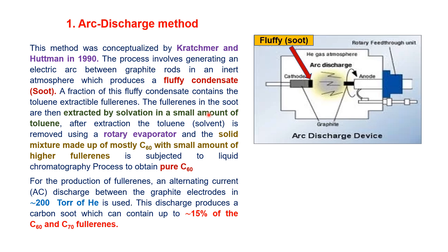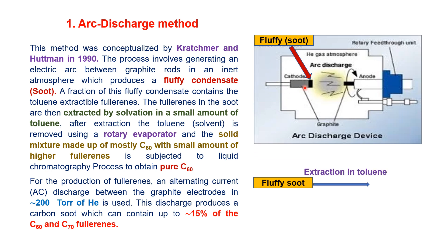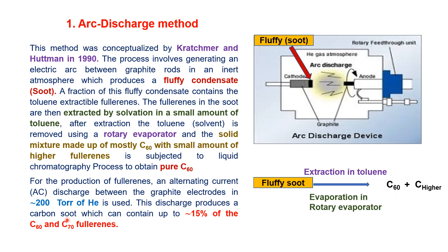The fluffy condensate deposited on the cathode is extracted and treated with toluene. The toluene is then evaporated in a rotary evaporator, and the solid sample containing C60 and some higher members is obtained. This is further subjected to liquid chromatography to obtain pure C60. For the production of fullerenes, alternating current discharge between graphite electrodes is used at a helium gas pressure of 200 torr. This discharge produces a carbon soot containing up to 15% C60 and higher members such as C70.